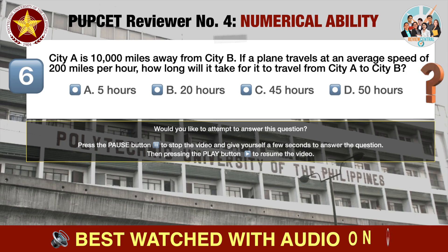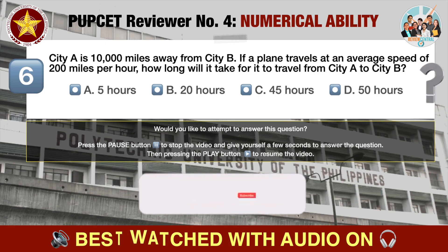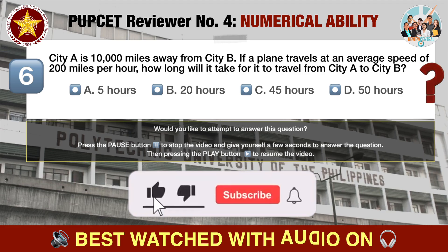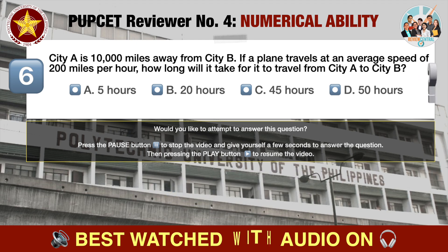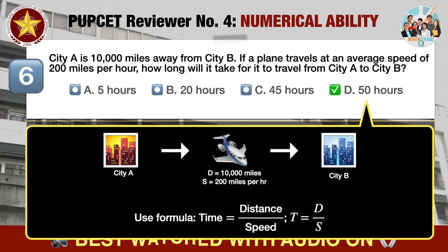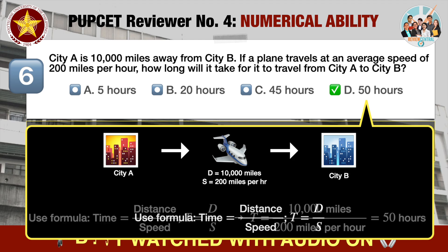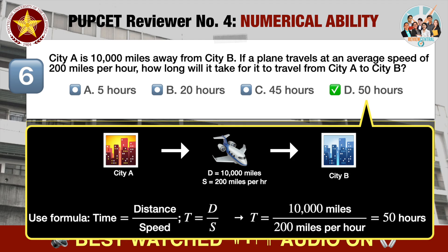Question number six: City A is 10,000 miles away from City B. If a plane travels at an average speed of 200 miles per hour, how long will it take to travel from City A to City B? A. 5 hours, B. 20 hours, C. 45 hours, D. 50 hours. The correct answer is D, 50 hours. Using the formula time = distance / speed: t = 10,000 miles ÷ 200 miles per hour = 50 hours. Therefore it will take 50 hours for the plane to travel from City A to City B.